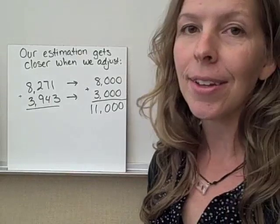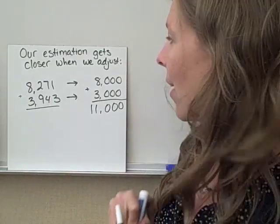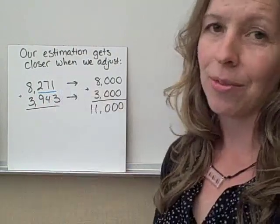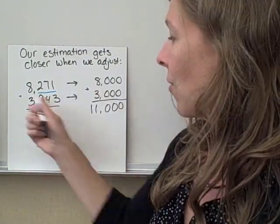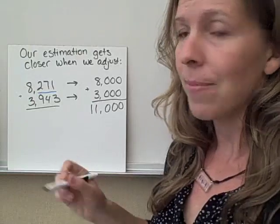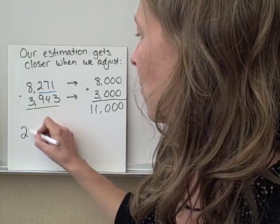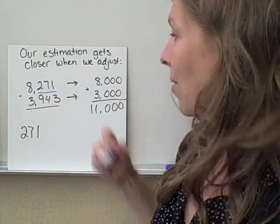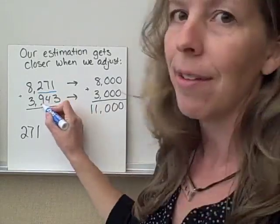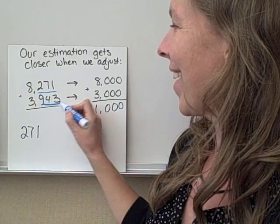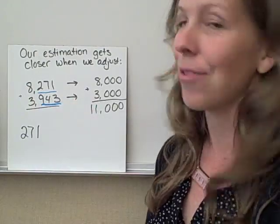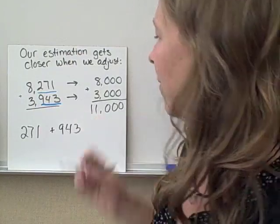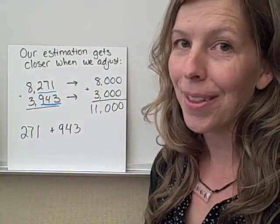So when we adjust, we need to look at the leftovers. This is what I would call the leftovers that we've just forgot. Remember, we turned them all into zeros. So for 8,271, our leftovers are 271. Our leftovers for the next number, 3,943, what are our leftovers? Right here, 943.